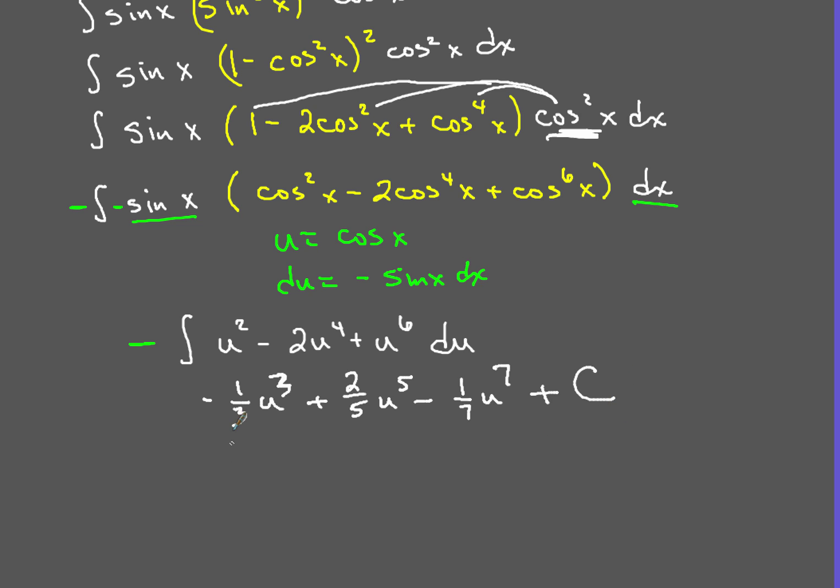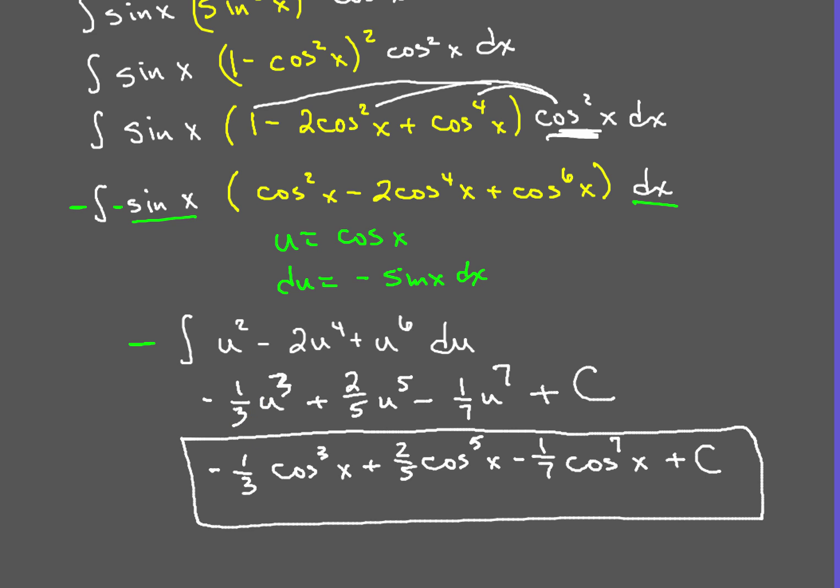And then, when we make that u substitution back in, when we put cosine of x back in, anywhere there's a u. So our final answer is negative one-third cos cubed of x, plus two-fifths cos to the fifth x, minus one-seventh cos to the seventh x, plus c. So as you can see, no pun intended,